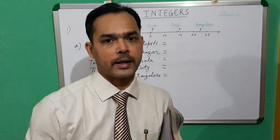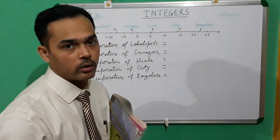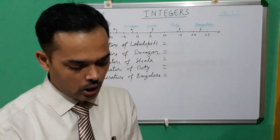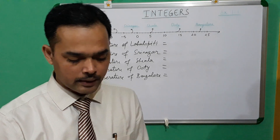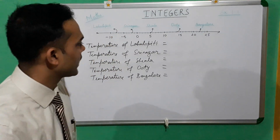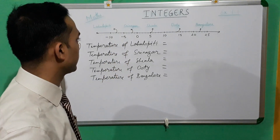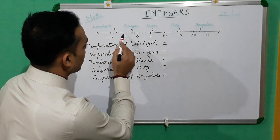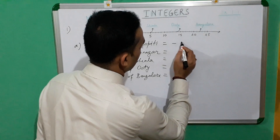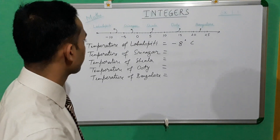If you see your textbook, you will observe that in question number 1 there is a number line drawn. The question in Part A asks: observe the number line and write the temperature of the places marked on it. The first one is Laul Spiti. Laul Spiti is lying between minus 5 and minus 10. Counting: minus 6, minus 7, minus 8. Therefore, the temperature of Laul Spiti is minus 8 degrees Celsius.